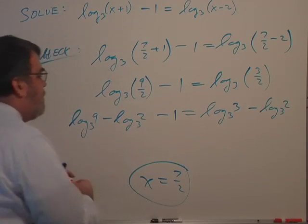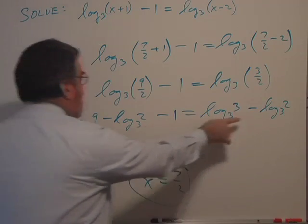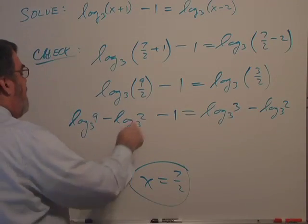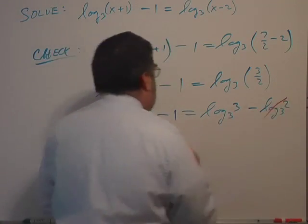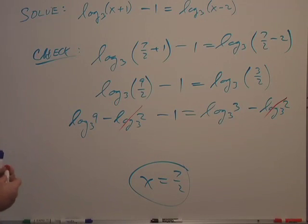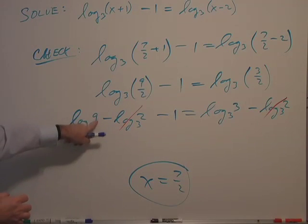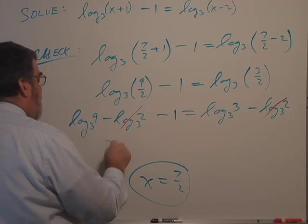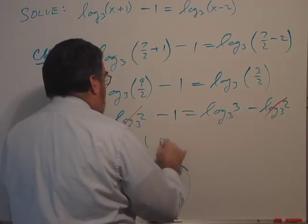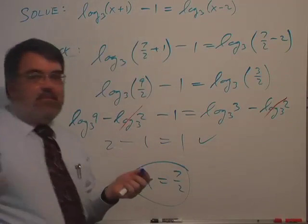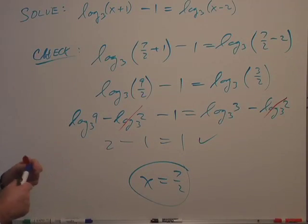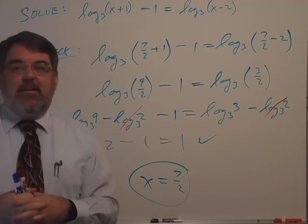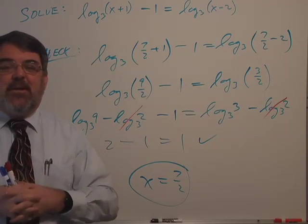Now the log of 2 base 3, there's a negative on each side, they would cancel. And log 9 base 3 is going to be, 3 squared is 9, so this is equal to 2. I have 2 minus 1 equals 1. So it checks out. It is, after all, a good answer. So there we go. That's what we have for there.